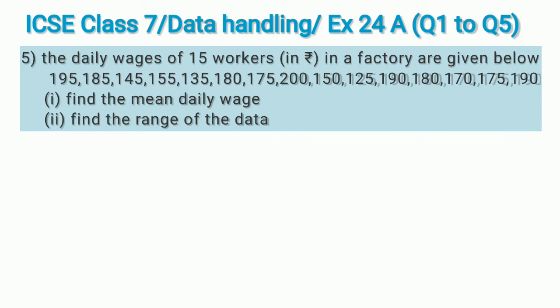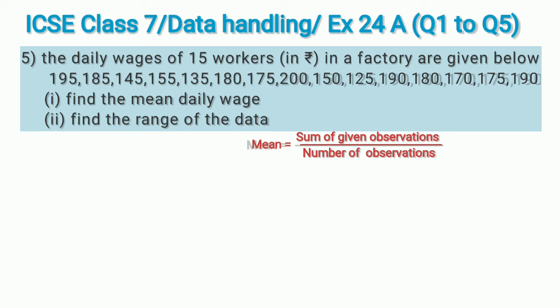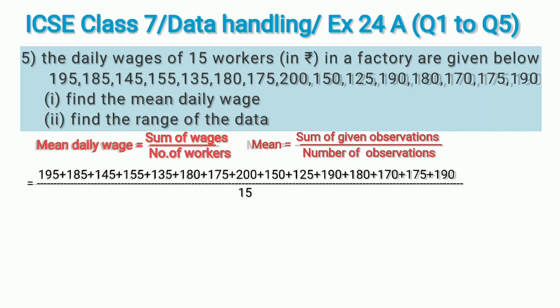Question 5: the daily wages of 15 workers in rupees in a factory are given below. The first sub-question is to find the mean daily wage, and the second is to find the range of the data. For mean: mean equals sum of observations divided by number of observations. The mean daily wage equals sum of all wages divided by 15. The sum of all wages comes to 2550.